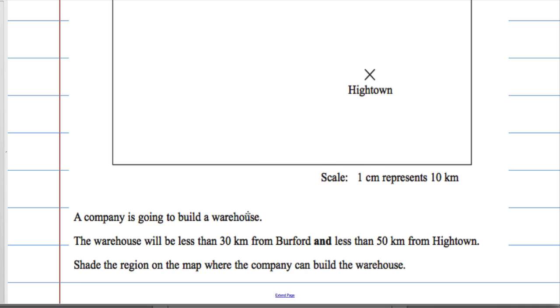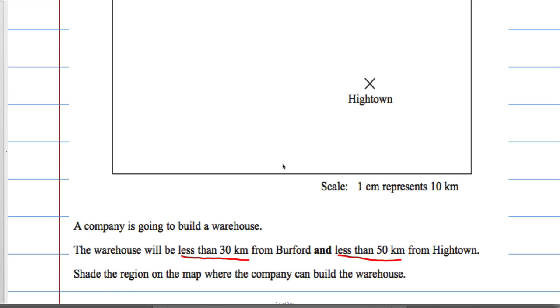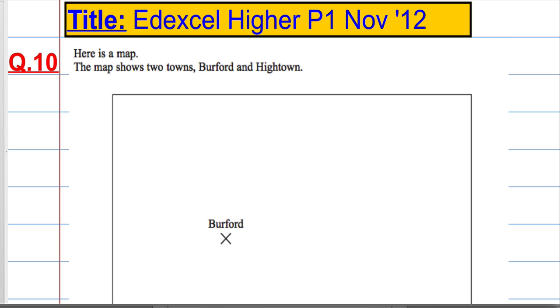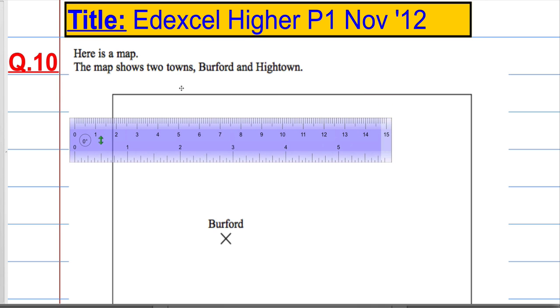A company is going to build a warehouse. The warehouse must be less than 30 km from Burford and less than 50 km from Hightown, and we need to shade the region on the map where they can build the warehouse. So, with most loci questions, you're going to need a ruler, and you're going to need a compass.